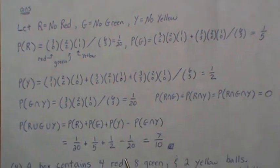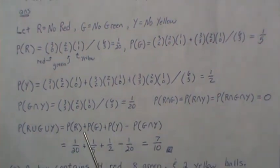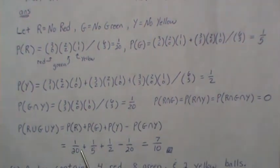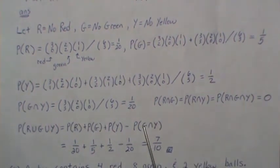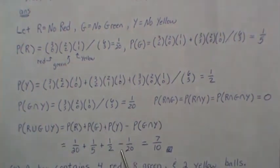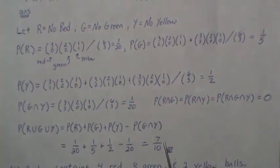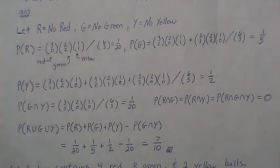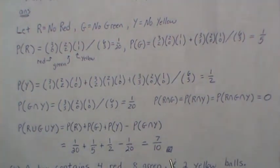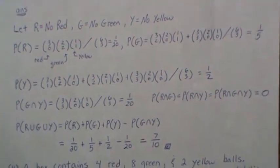So the probability of no red, or no green, or no yellow is the sum of individual probabilities minus the intersections, with the three-way added back — but those are all zero. Plugging in: 1/20 + 1/5 + 1/2 − 1/20, which equals 7/10, or 70%, which seems a little surprising.